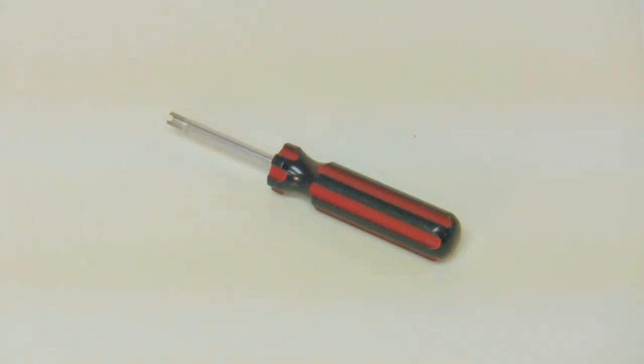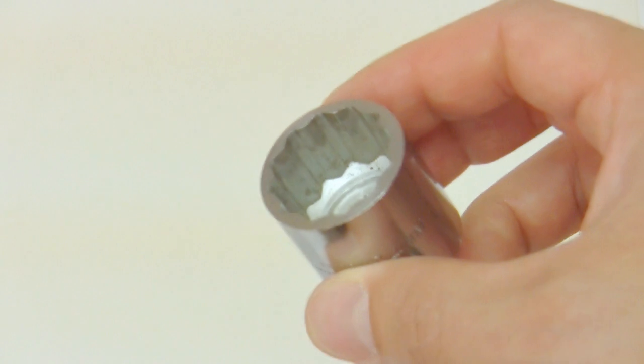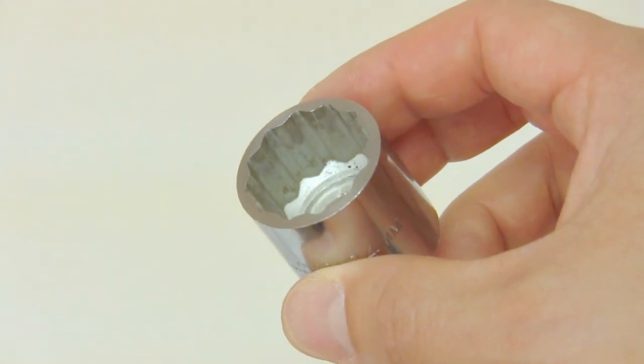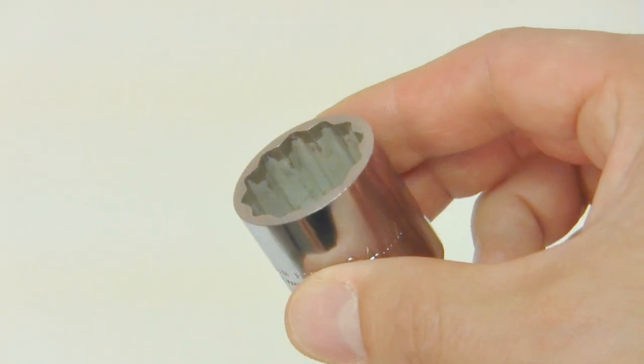Next, you'll need a Schrader valve tool. Then, a socket wrench with a 24mm socket. Notice how our socket face has been machined or ground flat. This will allow for the best contact between the socket and the fork part.